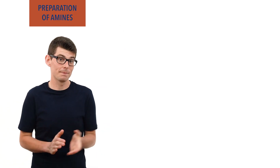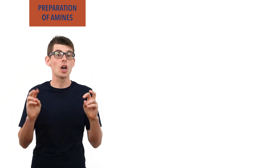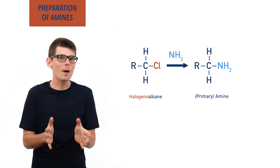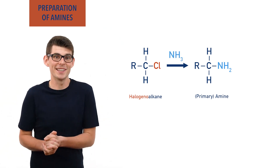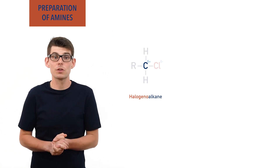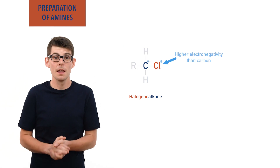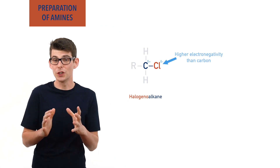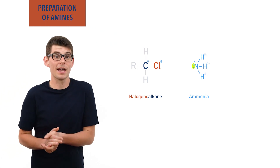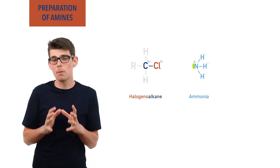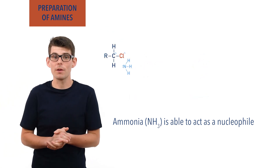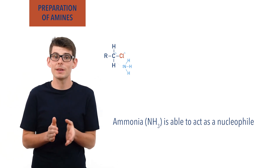Amines are derivatives of ammonia, NH3, meaning they can be considered as coming from ammonia. The most straightforward way to form an amine is by reacting a halogen alkane with ammonia. Halogen alkanes have a carbon atom with a partial positive charge due to the halogen having a higher electronegativity, making the carbon-halogen bond polar. The nitrogen atom in ammonia has a lone pair of electrons and a partial negative charge, enabling ammonia to act as a nucleophile and attack the partially positive carbon atom in the halogen alkane.